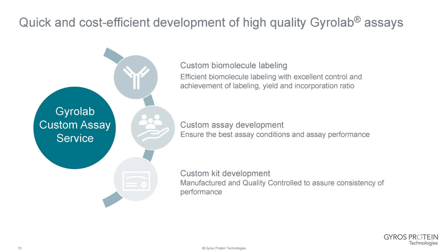Over the last year or so, we've implemented a new Gyrolab assay service, driven by demand and requests from our customers. We can offer custom biomolecule labeling — taking your reagents, performing both Alexa labeling and biotinylation, and providing them with a certificate of analysis, fully characterized based on your requirements. If needed, we can also do custom assay development, working with you to establish an assay format and transferring it back to you. In some cases, we can move forward to custom kit development, supplying you with a finished kit.